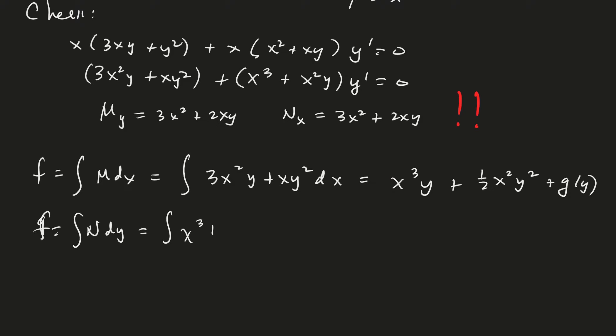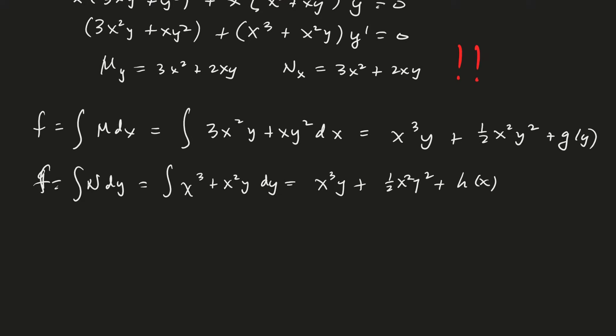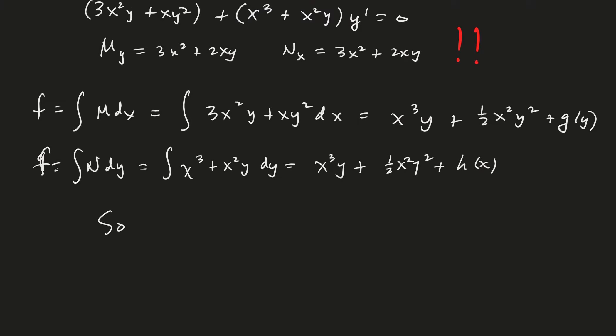So, x cubed plus x squared y dy, so that would be x cubed y plus one half x squared y squared plus h of x. Good. And then if we compare the two functions, I think we see that the solution is x cubed y plus one half x squared y squared equals c.